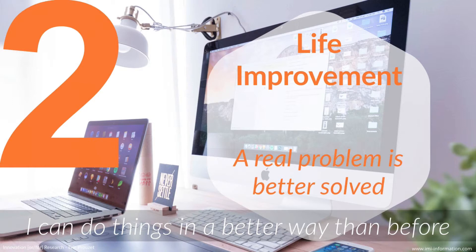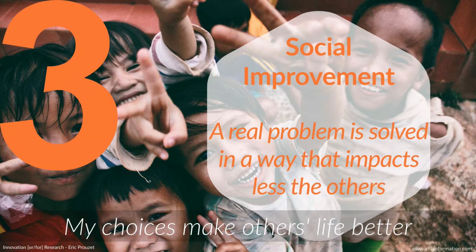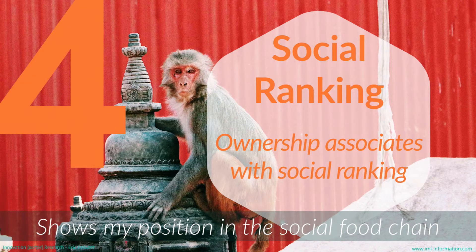The second value is life improvement. A real problem is still solved, but it's solved better than before — I can do things in a better way. Cars allow me to travel from A to B; I had other transportation modes before, but the way it's done is better. Life improvement is related to what we call incremental innovation. Value number three is what I call social improvement — a real problem is solved in a way that impacts others less. My choices make others' lives better. For example, a chemical company might modify its waste processing to reduce pollution and improve others' lives.